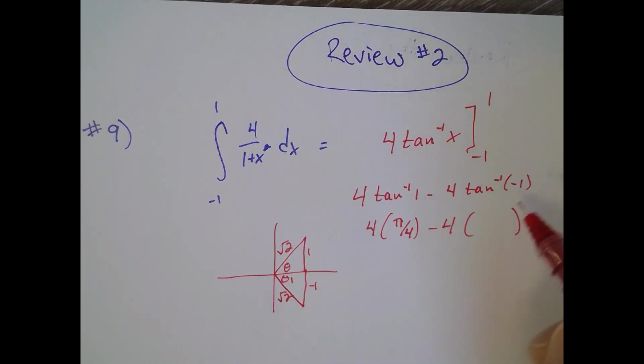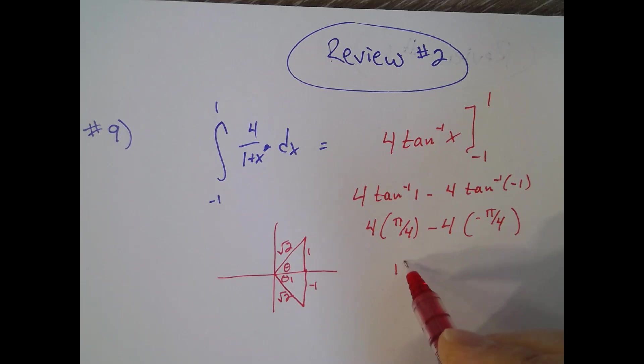So simplified, it's pi plus pi, which gives you two pi for an answer.